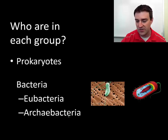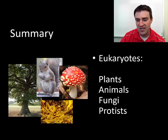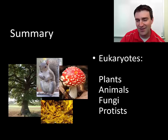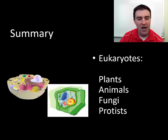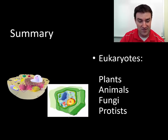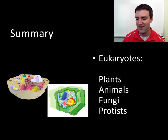We'll eventually talk more about eubacteria and archaebacteria. The eukaryotes include plants, animals, and fungi. Protists were not on the previous diagram, and we'll eventually talk about why protists is a poorly defined group. These are the kinds of eukaryotic cells those organisms might be made of — you can generally see there's more stuff in them than in the simpler prokaryotic cells.